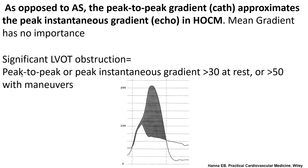What do we consider a significant gradient in HOCM? The standard definition: peak-to-peak or peak-instantaneous gradient more than 30 mmHg at rest, or more than 50 mmHg with dynamic maneuvers. To qualify for septal ablation procedures, both the resting and provoked gradient need to meet the 50 mmHg cutoff.